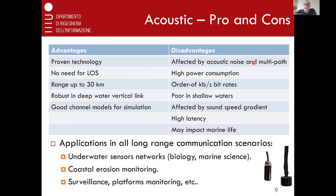Bit rates are at best a few kilobits per second, more often especially in long range, hundreds or tens of bits per second. It's affected by the characteristics of sound in water, and there are some effects unseen in radio propagation. For example, there is a sound speed gradient through the depth of water where you have bending signals that may create shadow zones or make a farther node more easily reachable than a close-by node — things that are kind of counterintuitive because the physics behind this is quite complex.